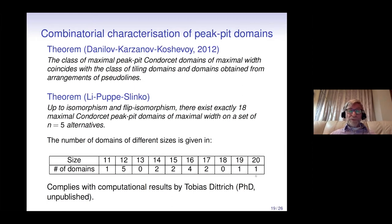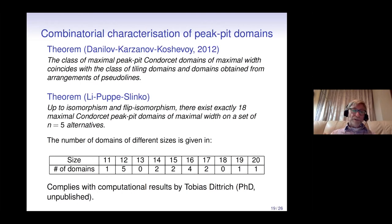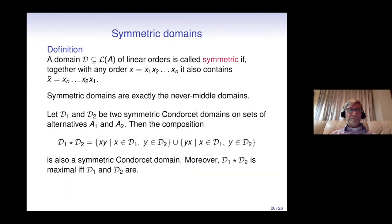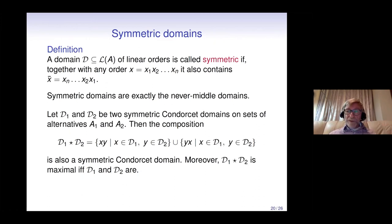This is consistent with computational results by Tobias Dittrich, who in his unpublished PhD thesis listed all maximal Condorcet domains up to five alternatives, though it is useful to have it established by theoretical means.